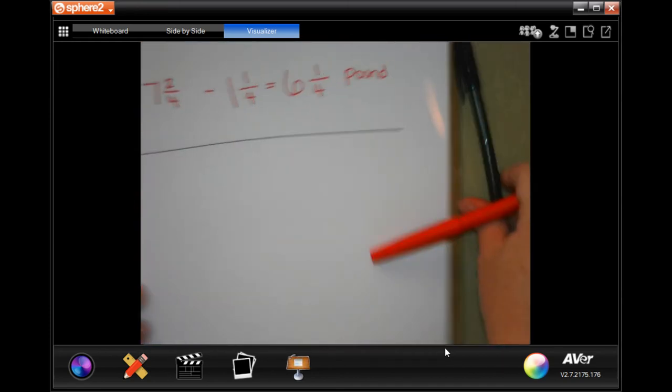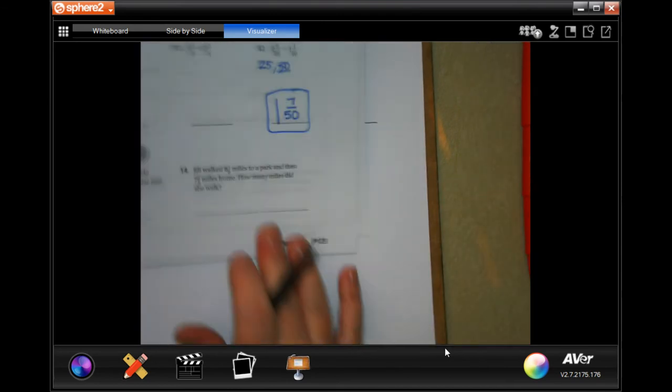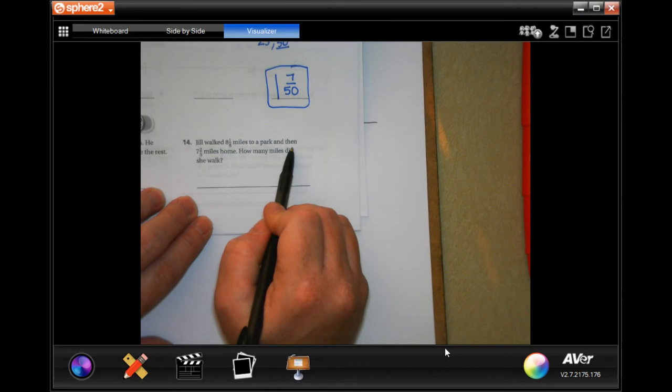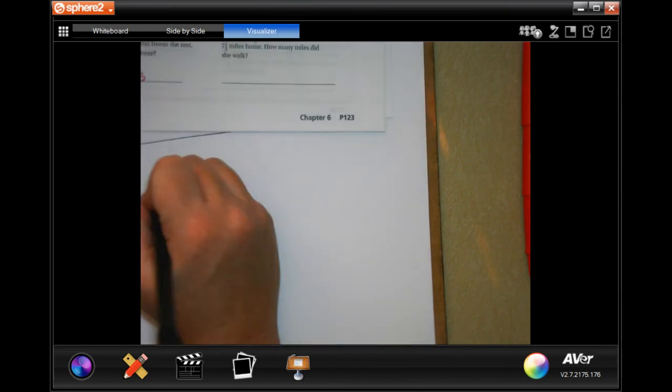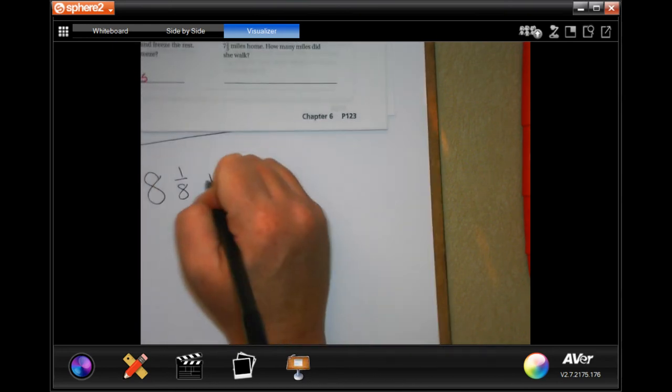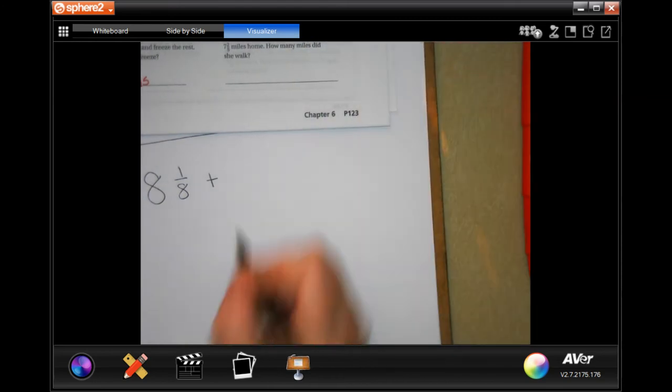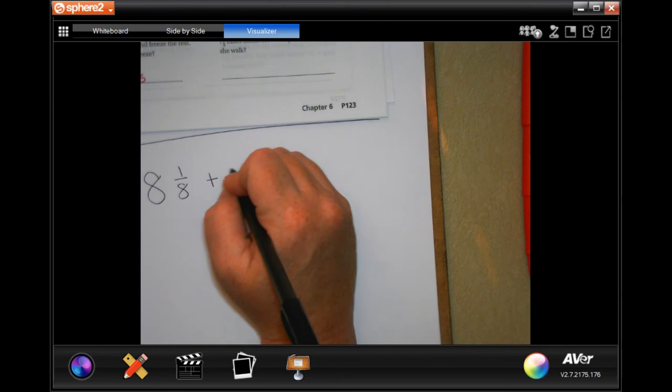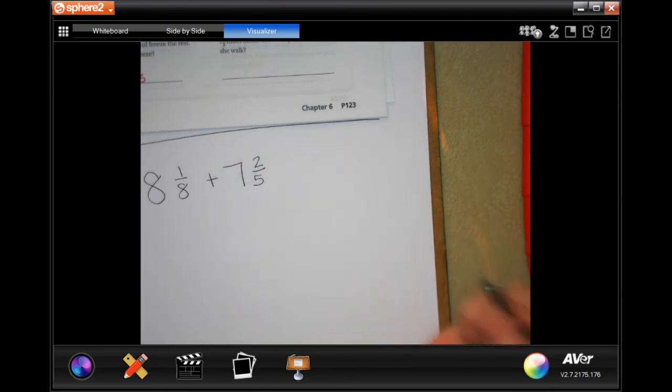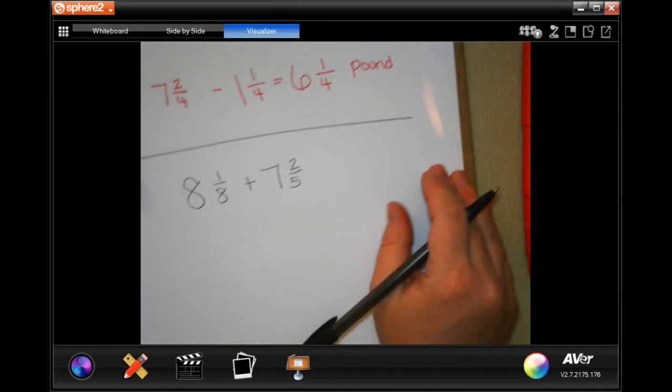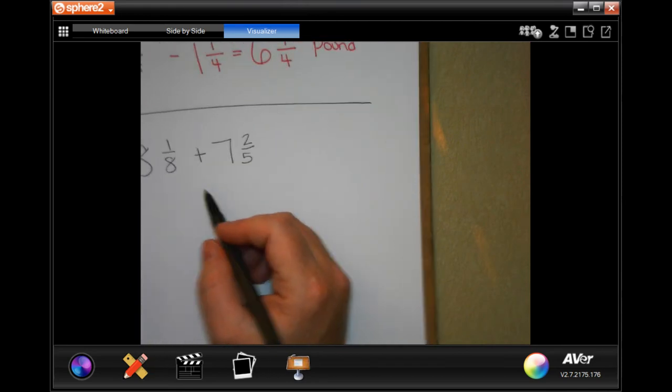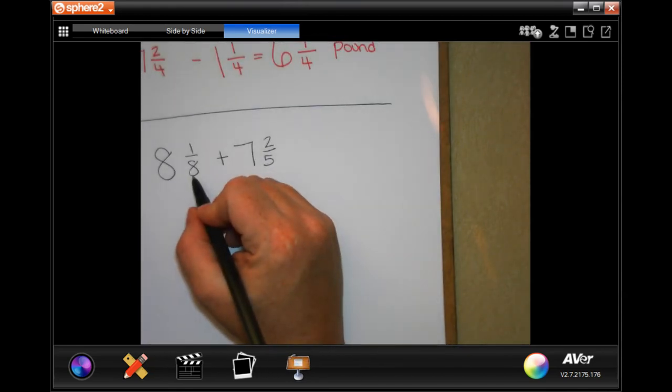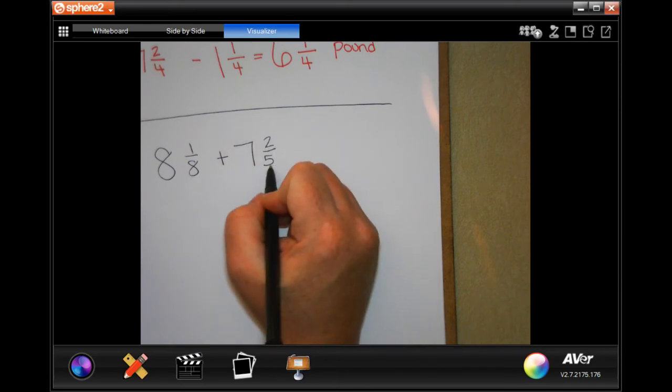Next. It says, Jill walked 8 and 1/8 miles to the park, then 7 and 2/5 miles home. How many miles did she walk? So 8 and 1/8, and 7 and 2/5. Well, in order to find my common denominator, I would write down my multiples of 8 until I got to one that ended in a 0 or a 5, because every multiple of 5 ends in 0 or 5. So I know 8, 16, 24, 32, 40. Oh, 40 right there. So my new denominator is going to be 40.